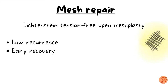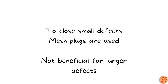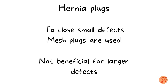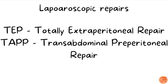The main advantages of Lichtenstein tension-free open meshplasty are lower recurrence compared to open suture techniques like Bassini or Shouldice repair, and comparatively earlier post-operative recovery. Hernia plugs are mesh plugs used to close small defects in the abdominal wall — they are not beneficial for patients with larger defects. For laparoscopic repairs, there are two important techniques: TEP (totally extraperitoneal repair) and TAPP (transabdominal preperitoneal repair).